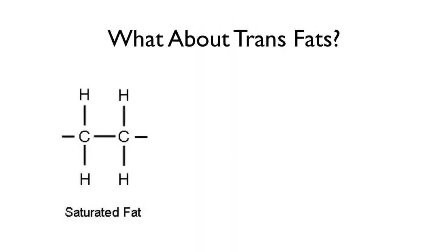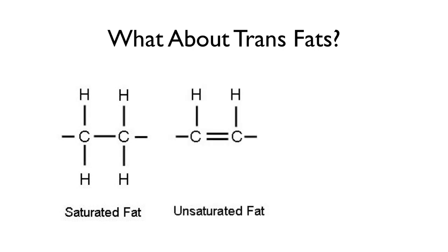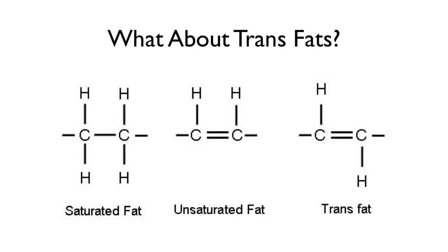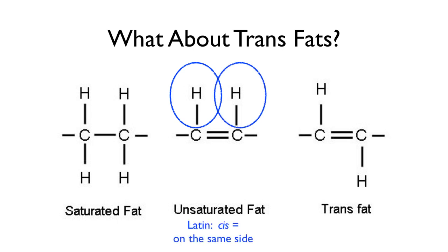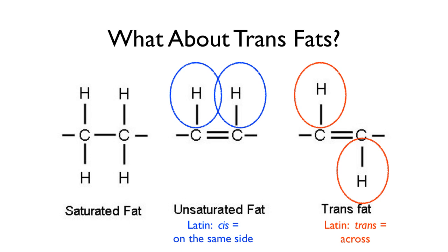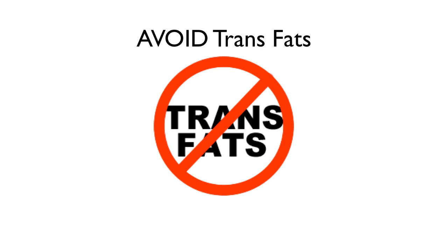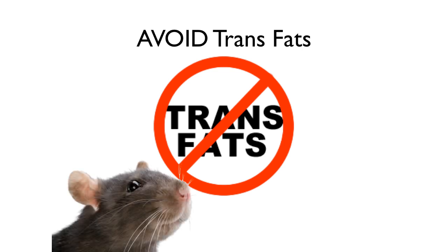What about trans fats? An unsaturated fat has its two hydrogens on the same side of the chain — in chemistry we call that a cis isomer, from the Latin for 'on the same side.' The other configuration is the trans isomer — Latin for 'across.' Trans fats turn out to be really nasty on the body and you've got to avoid them at all costs. As my dietician friend says, it would be healthier to eat food covered in rat droppings than to eat trans fats — gross, but a memorable visual.